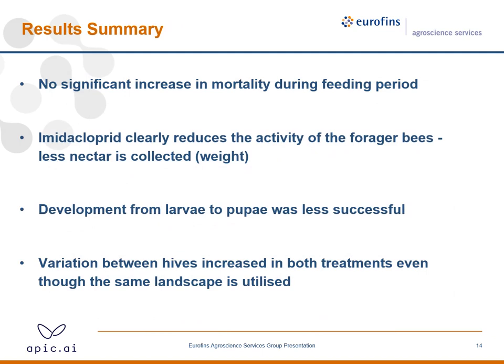In summary: there was no significant increase in mortality during the feeding period. The 200 microgram per kilogram imidacloprid clearly reduced the activity of forager bees. There was definitely less nectar collected, visible in the hive weight changes. There were also fewer bees developing — the transition from larvae to pupae was less successful immediately after the feeding period. Variation between hives increased in both treatment groups, even though the same landscape was used. And now, Katharina.